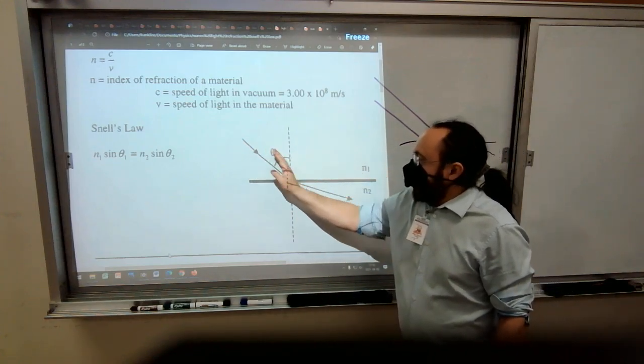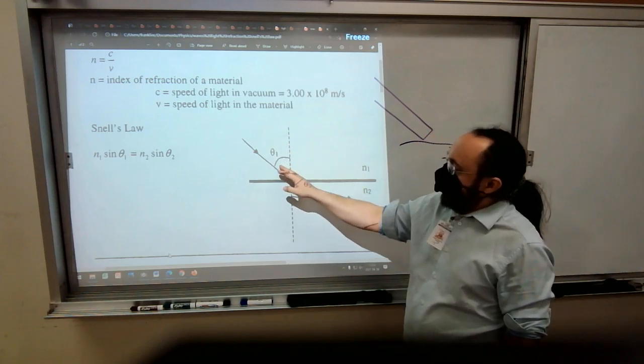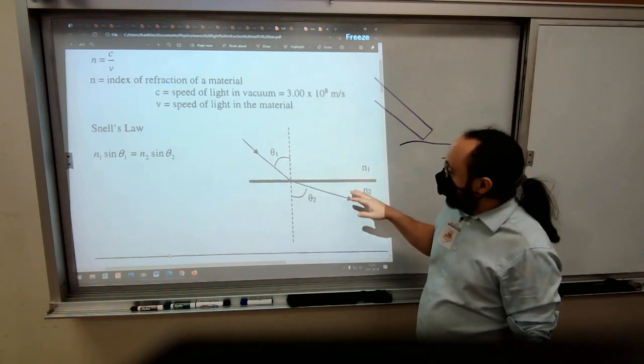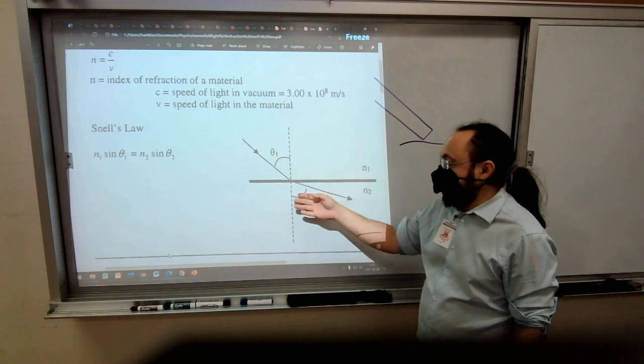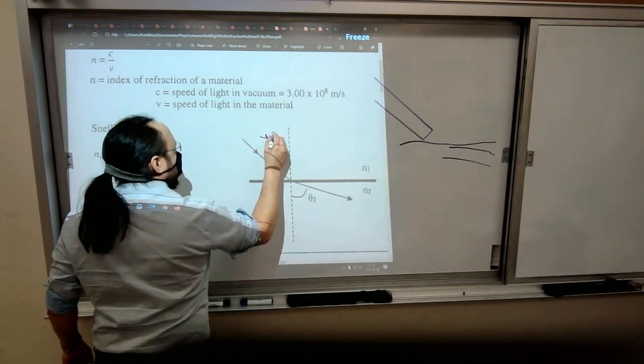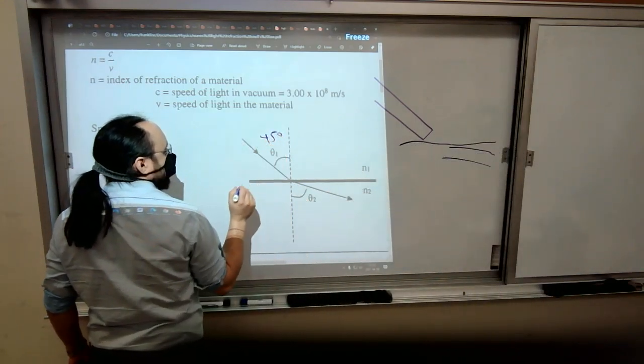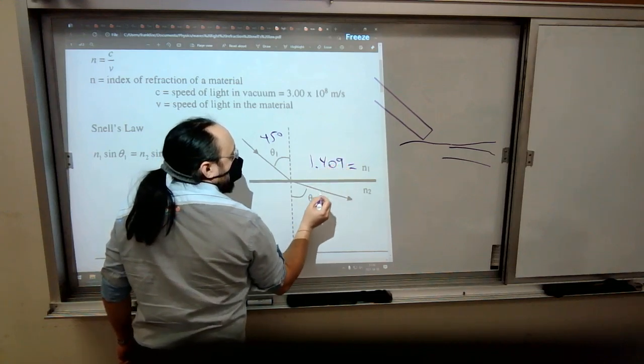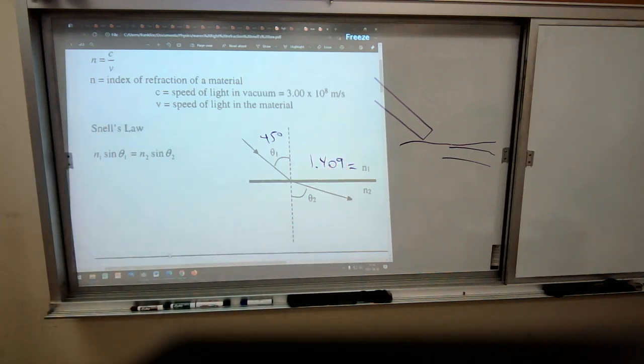So Snell's law means that n1 times the sine of this angle—you know, this index of refraction times the sine of the angle in that material—is equal to this index of refraction times the sine of this angle. So we're going to work this out. This one looks like it's about 45 degrees, and let's pretend like n1 up here is 1.409. I picked that number specifically.